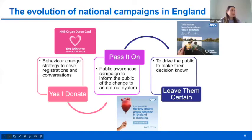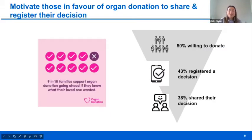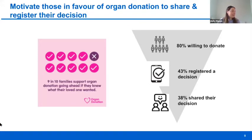Our latest campaign is the Leave Them Certain campaign. While the law change campaign successfully informed the public about the new opt-out system, it unfortunately increased inertia — those in favor believe they do not need to do anything. In England we introduced a soft opt-out system, meaning families will always be consulted before organ donation goes ahead. Nine in ten families support donation going ahead if they know what their loved one wanted, so we need to drive action amongst those willing to donate.